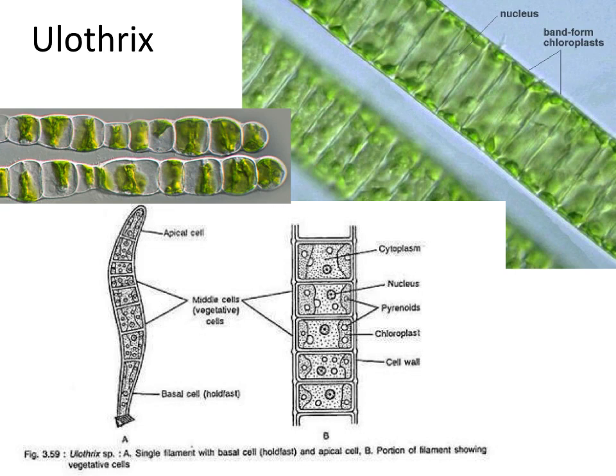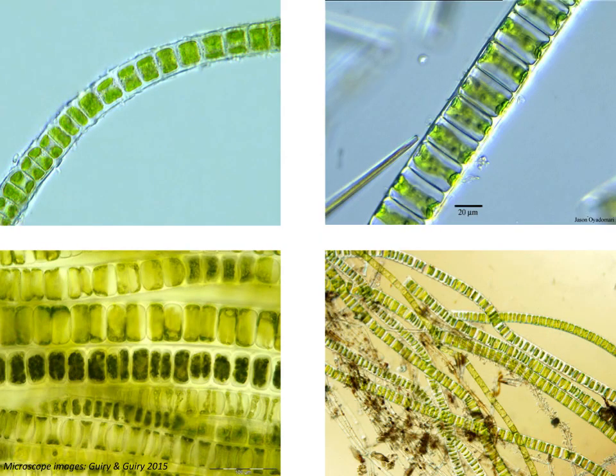They have band-like chloroplasts that surround the cell like a ring, covering almost all or part of the cell. The modified basal cell is also called a holdfast cell, which allows it to attach to surfaces and therefore grow on substrates. Here is a selection of some Eulothrix species as they would look under the microscope. Spend some time to look at the cell shape and structures, and compare it with the detailed diagram in the previous slide.